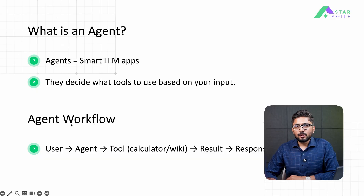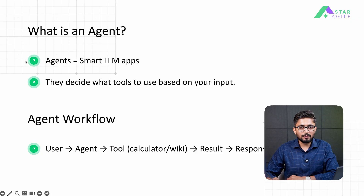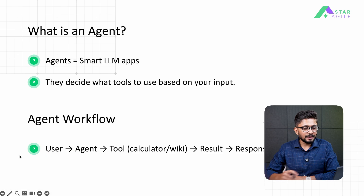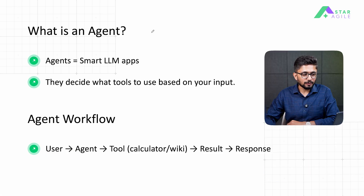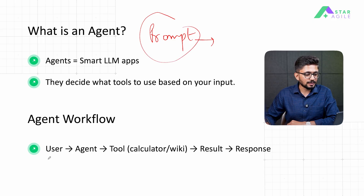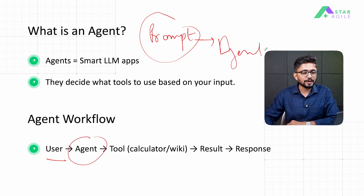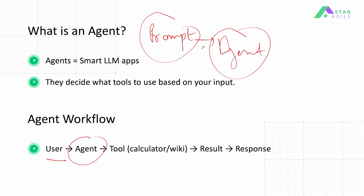So let's begin by talking about what is an agent. An agent is a smart LLM application. An agent can look at an input prompt from a user, and this prompt will be evaluated by the agent. The user will give a prompt and the prompt will go to an agent. Consider an agent to be like a middleman — depending upon what the prompt says, an agent will evaluate it and see what the user wants to do.